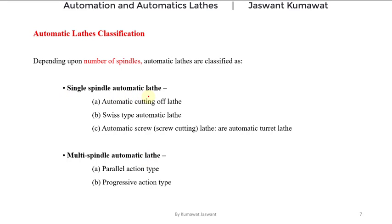Single spindle automatic lathes are those which have only a single spindle, and they are further classified as automatic cutting-off lathes, Swiss type automatic lathes, and automatic screw or screw cutting lathes. We will study all these lathes one by one in upcoming sessions. Multi-spindle automatic lathes are of two types: parallel action type multi-spindle automatic lathes and progressive action type multi-spindle automatic lathes.